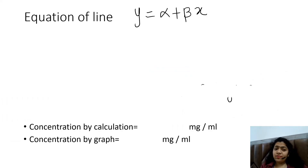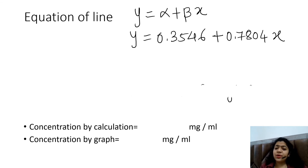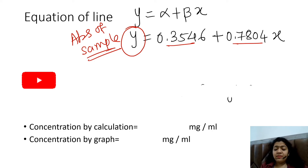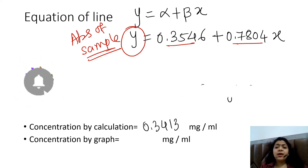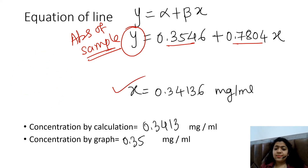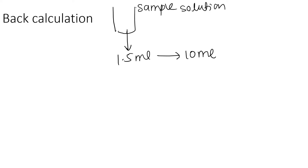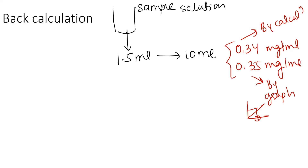These are the values of alpha and beta which I have found. Now I write the equation of the regression line and substitute the values of alpha and beta. After substituting, I put the absorbance of the sample — which we got from the instrument — into the equation and solve for x, giving a concentration of 0.34 mg per ml. So concentration of the sample by calculation is 0.34, and by graph it was 0.35 mg per ml — these are the concentrations of the 10 ml flask.